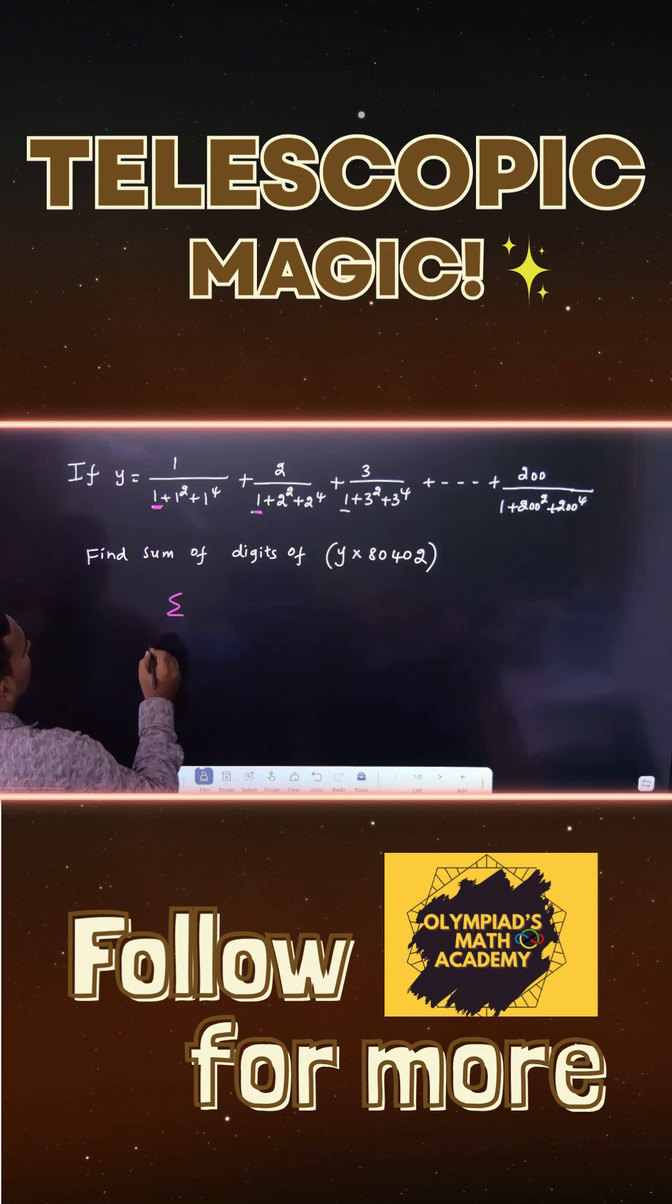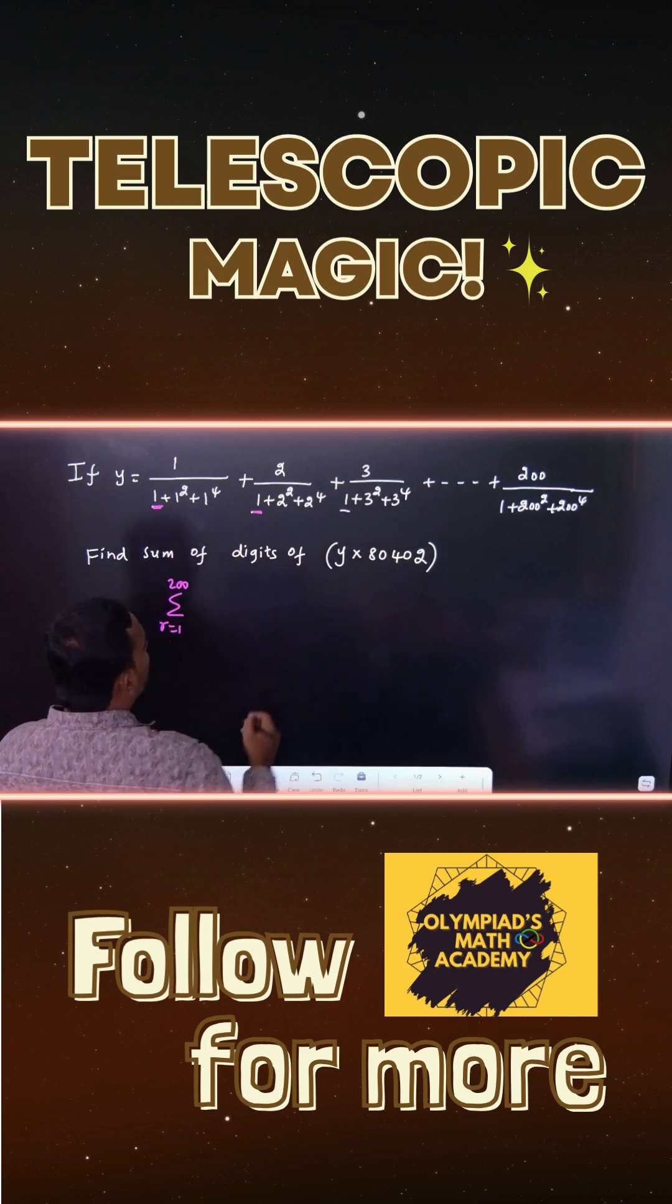You can see the pattern, the series, r varies from 1 to 200. 1, 2, 3 up to 200 is there.